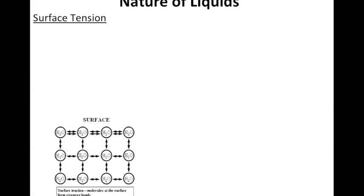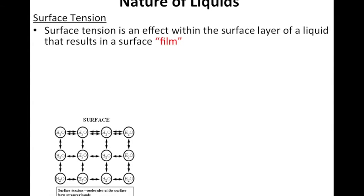The next thing we're going to talk about is specific to liquids and it's called surface tension. You might have heard this term before, but surface tension is an effect within the surface layer of a liquid that results in a surface film. So think of film as like a layer that is impenetrable. Although in surface tension, it is penetrable, it's just harder.